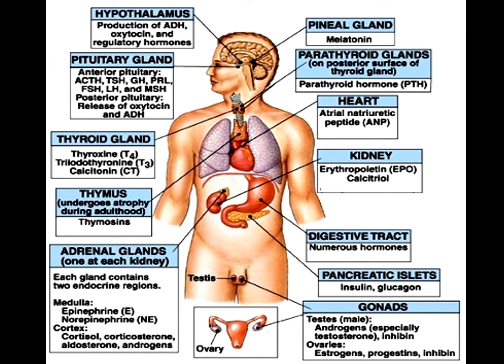A display shows which hormones are released from which site. At the level of the hypothalamus, it is responsible for ADH, oxytocin, and different regulatory hormones. One gland is responsible not only for one hormone but multiple hormones — for example, the thyroid gland releases T4, T3, and the calcium regulator calcitonin.